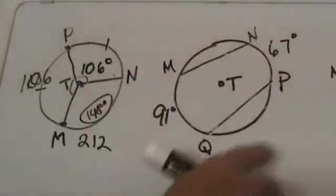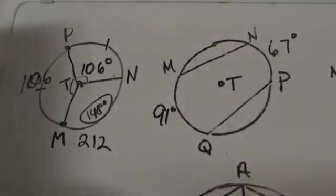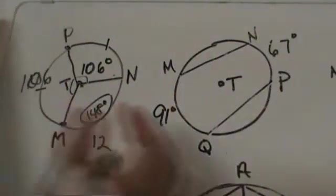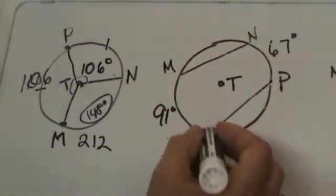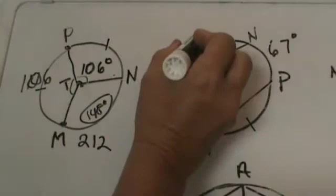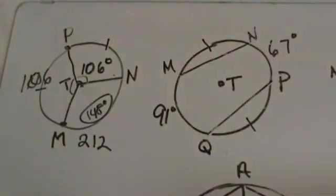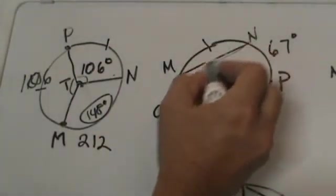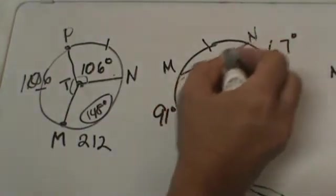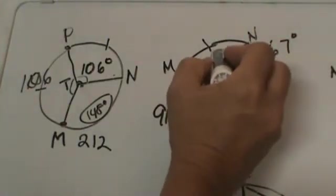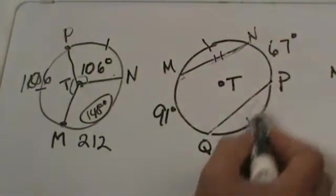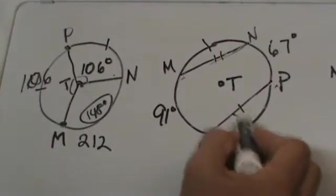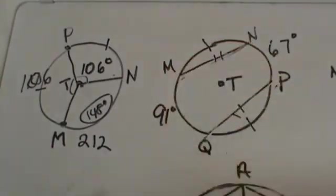Let's look at the second one, which is number 20. We have a drawing here and I have to add the two congruent arcs. What that tells us is that chord MN is congruent to PQ because we have congruent associated arcs.